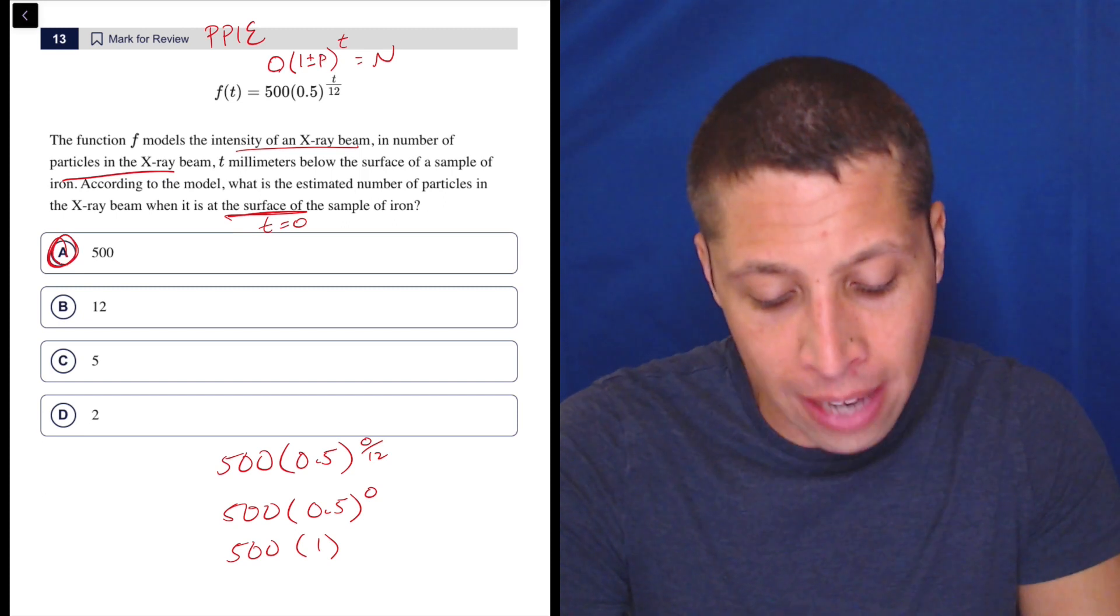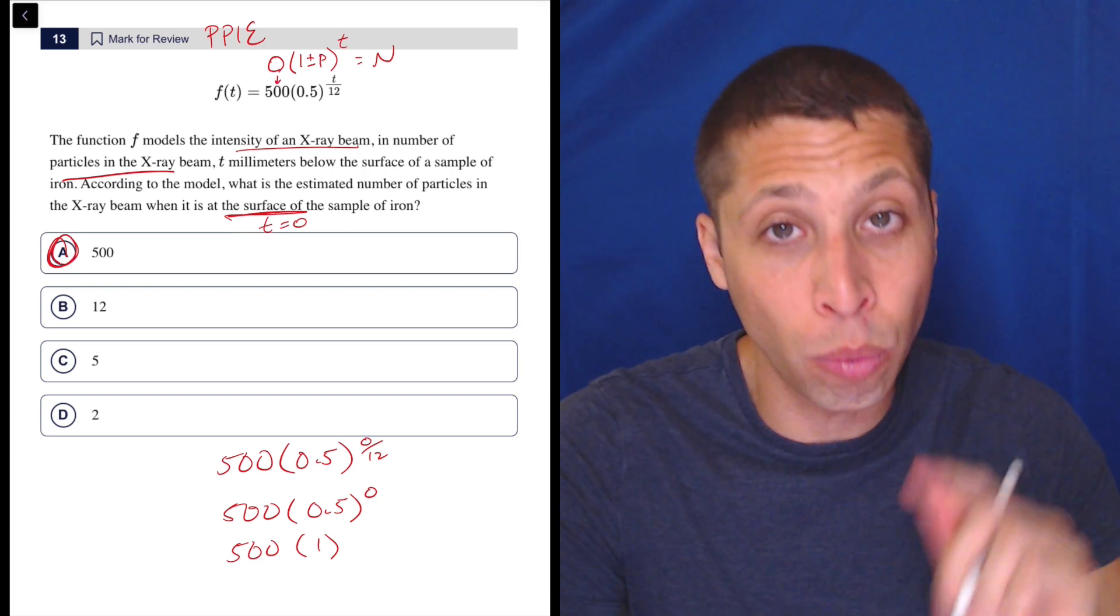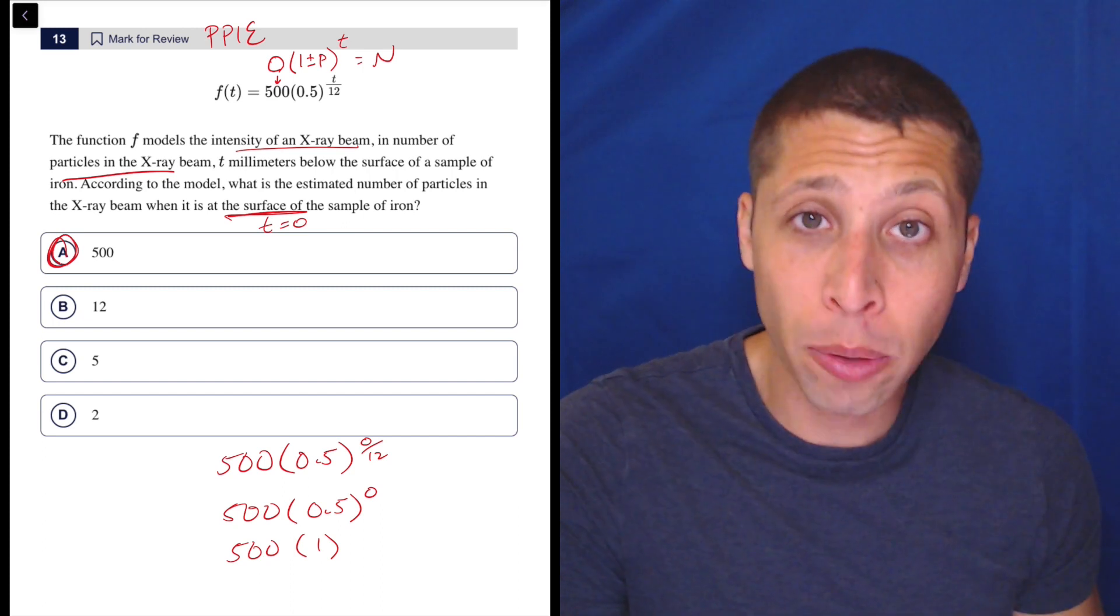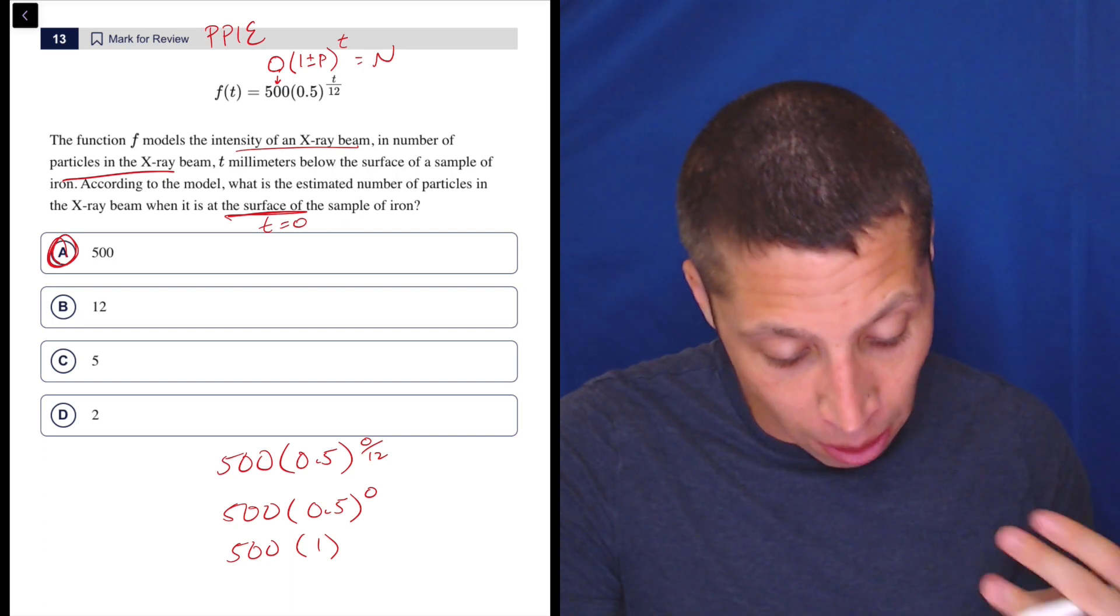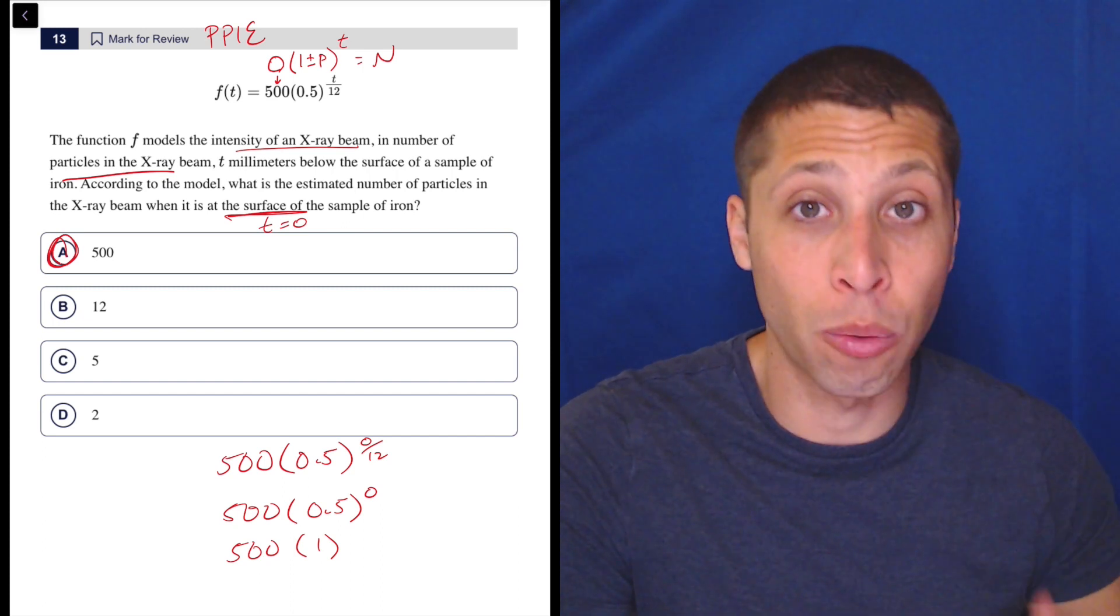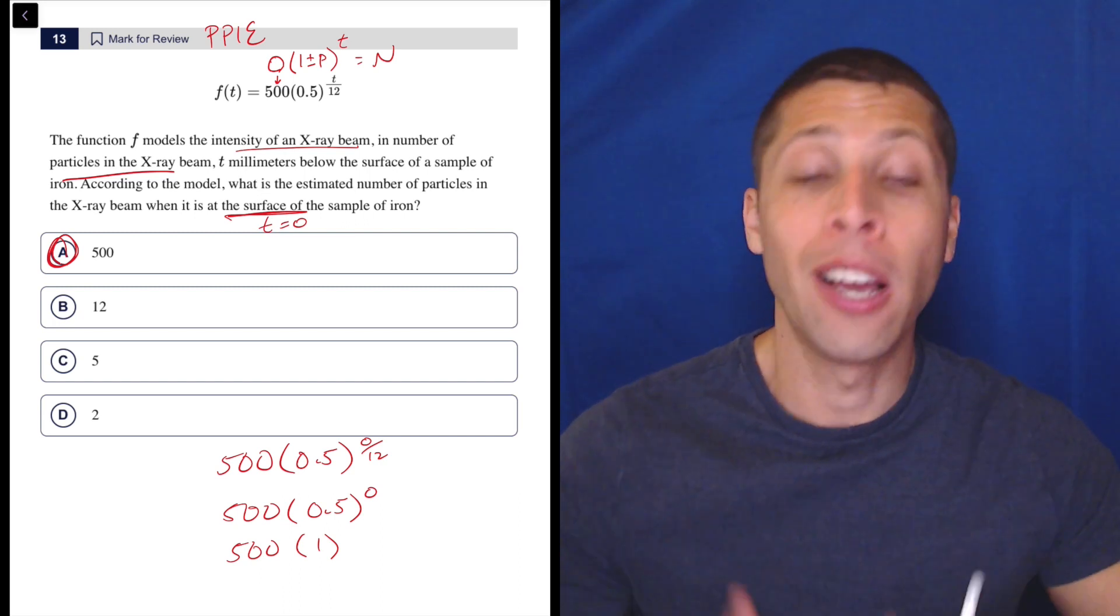And the reason that this helps is that the o, remember, that's the original value. Well, that's what they asked, right? What is the number of particles when it's at the surface? When it's originally kind of starting, what's our value?